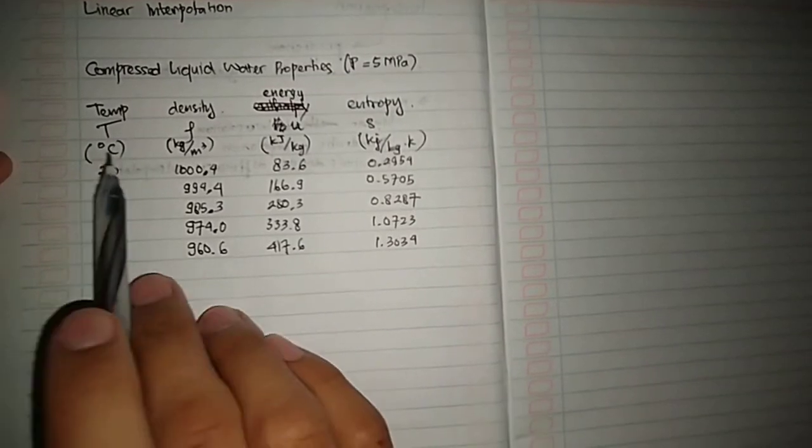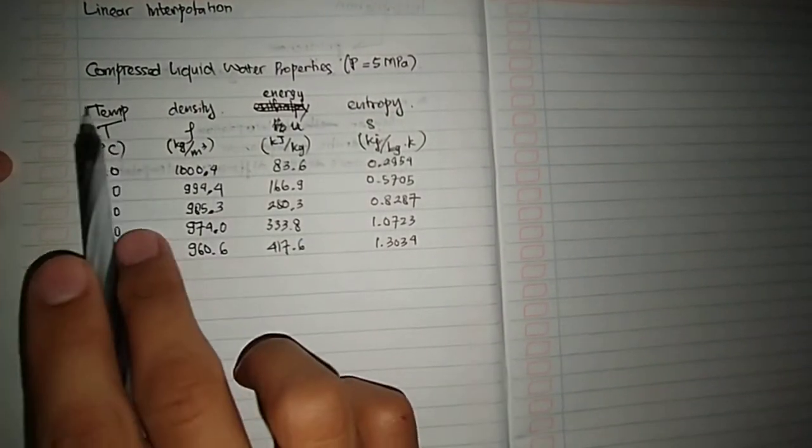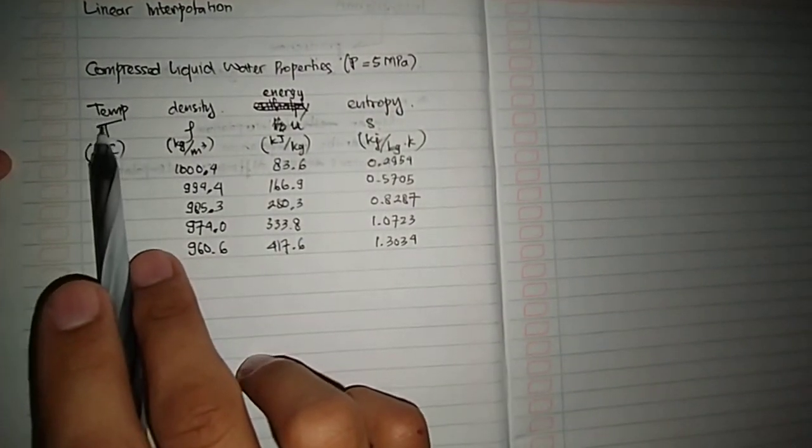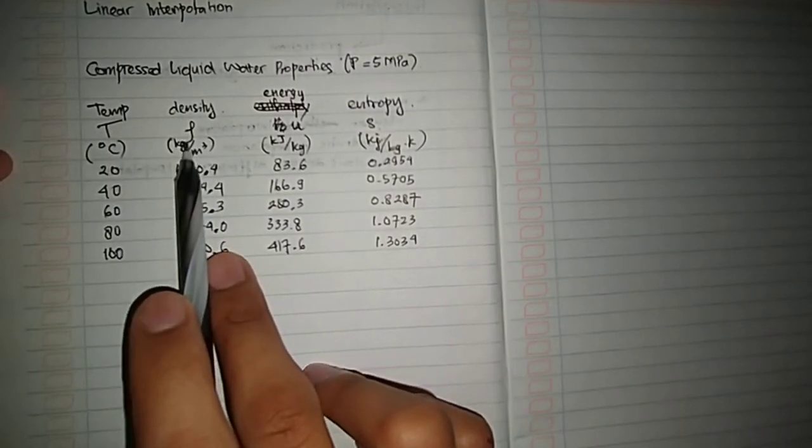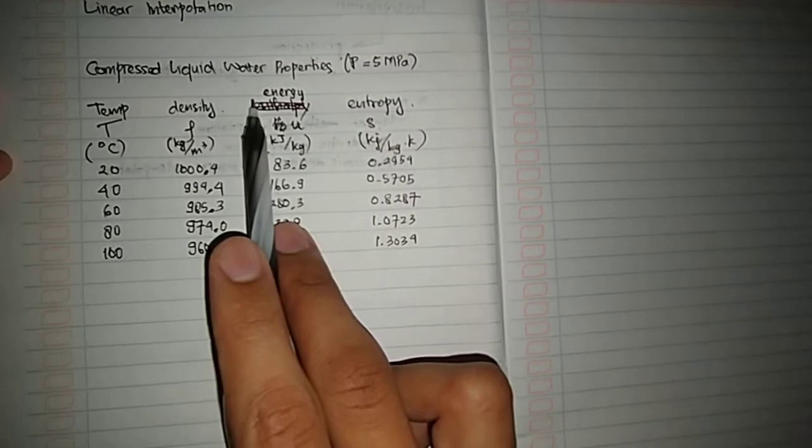Now there is some data here. This is for temperature, the symbol is T. And then the density, the symbol is rho. And then the internal energy, the symbol is U.